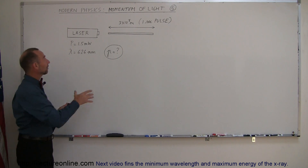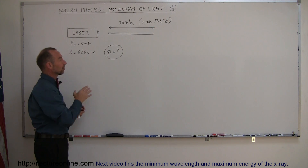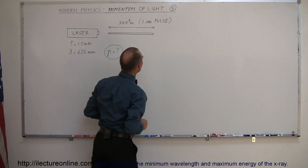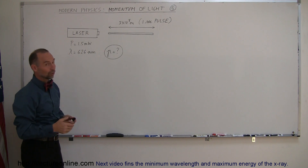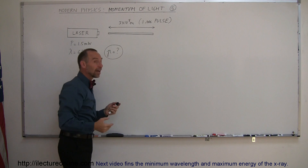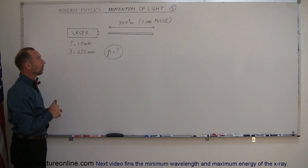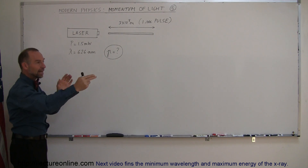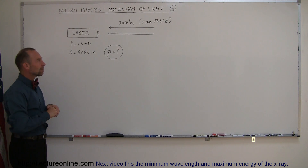In our example we have a laser. We turn the laser on for one second — so a one-second pulse of light emanates away from the laser. A one-second pulse would be 3×10⁸ meters long, or 300,000 kilometers long, because light travels at 300,000 kilometers per second. If we turn the laser on and off, that beam of light will emanate and in one second you'll have a 300,000 kilometer long beam of light.